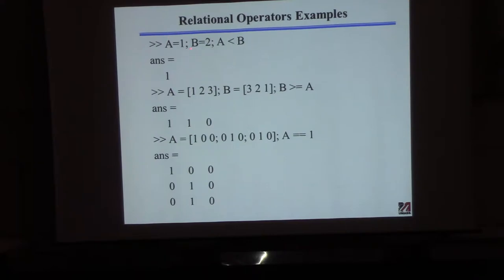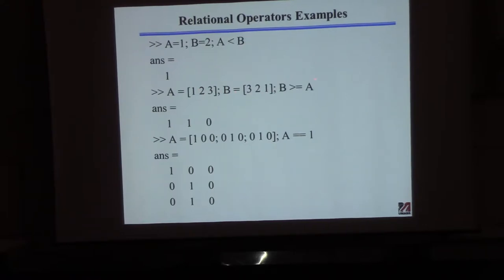Here are some examples. If I define A to be one and B to be two and ask is A less than B, the answer is yes — it gives back one. You can also do this with a vector. Here's a vector A and a vector B of the same dimension. Is B greater than or equal to A? It compares element by element: is three greater than one? Yes. Is two greater than or equal to two? Yes. Is one greater than or equal to three? No. So it gives back a vector of answers.